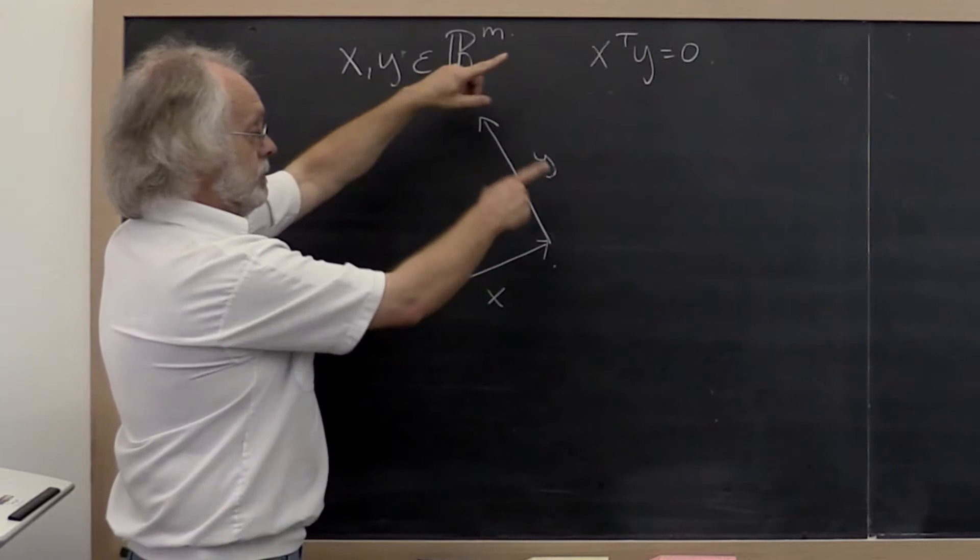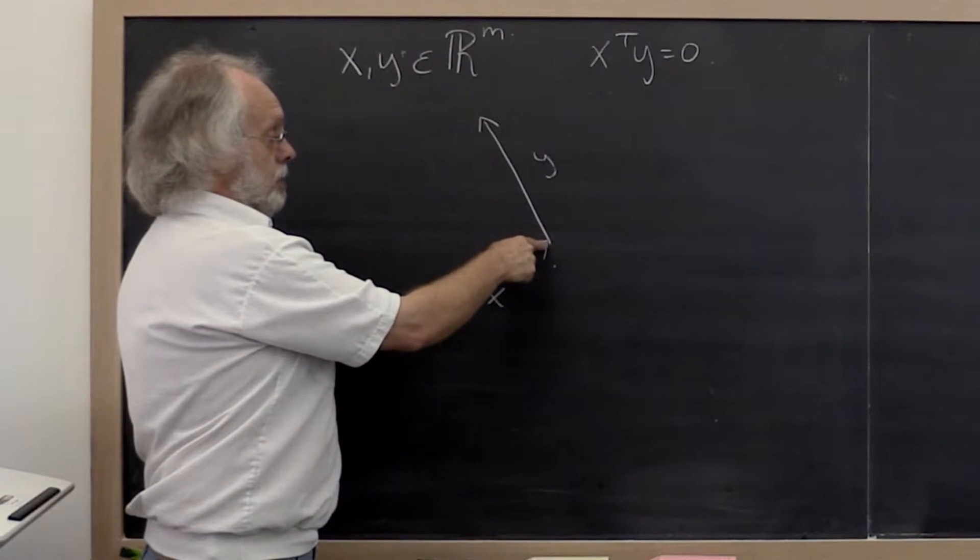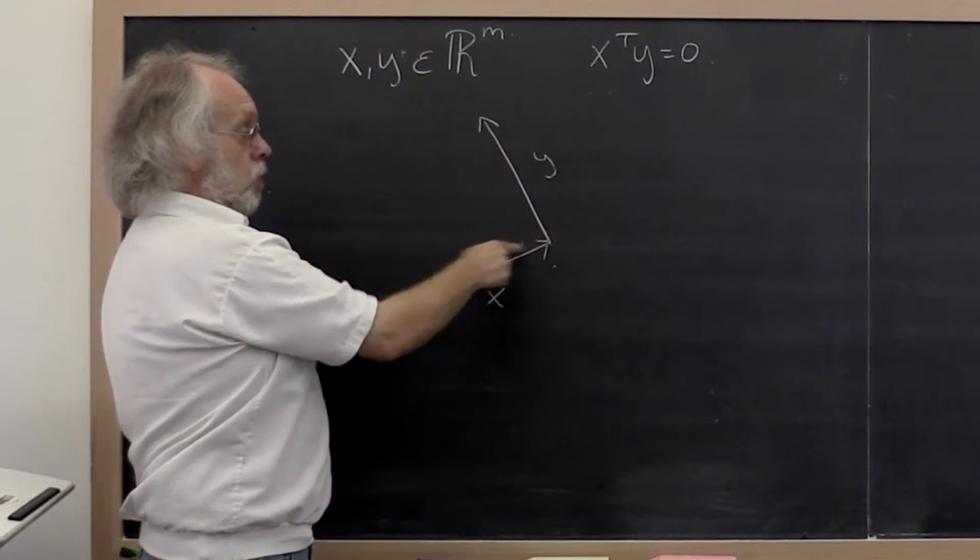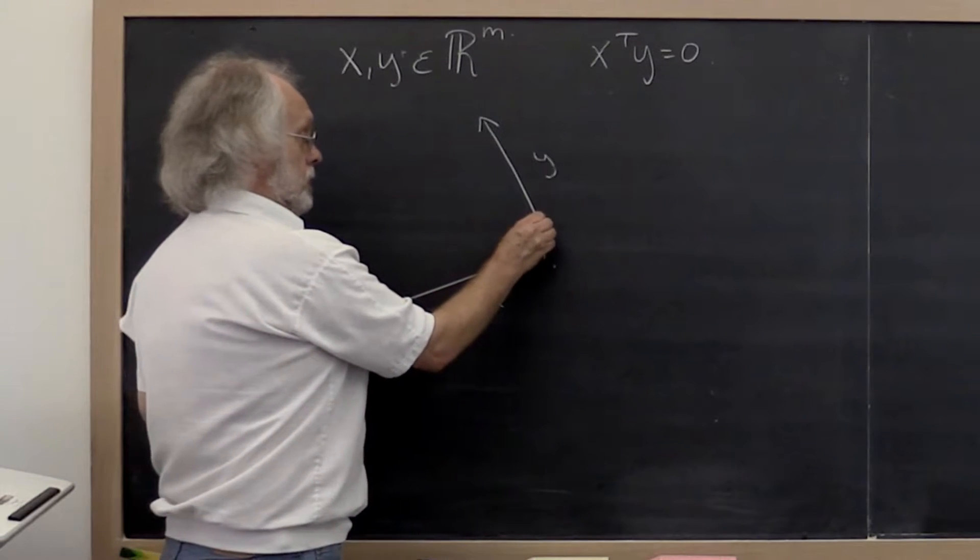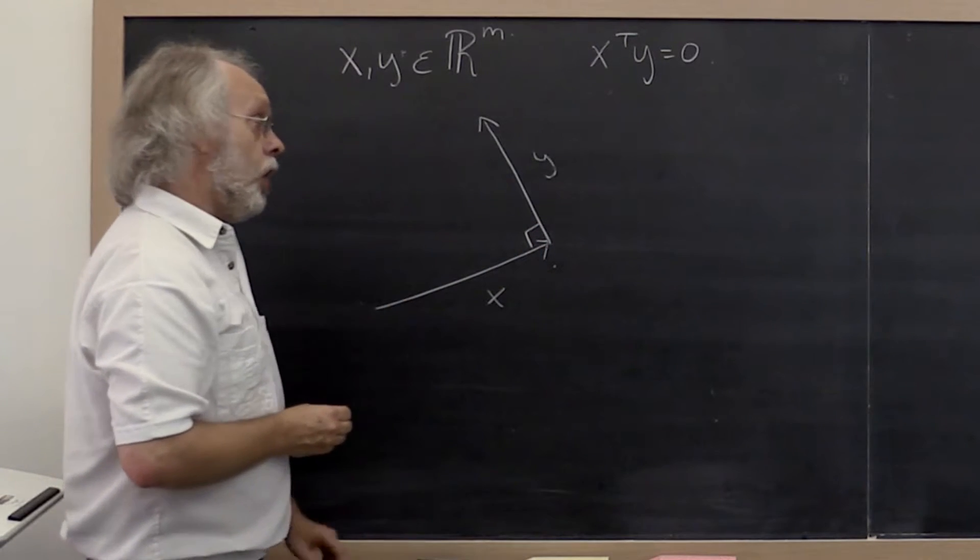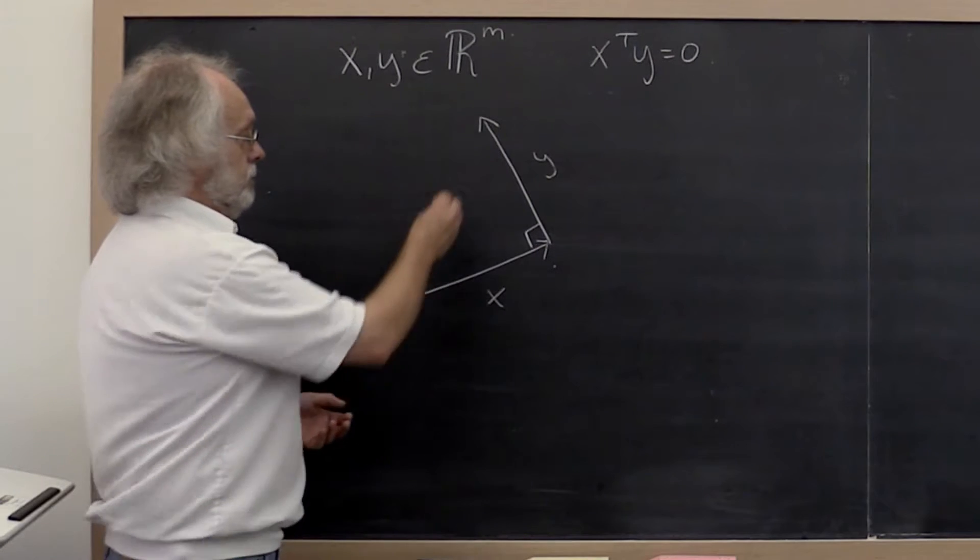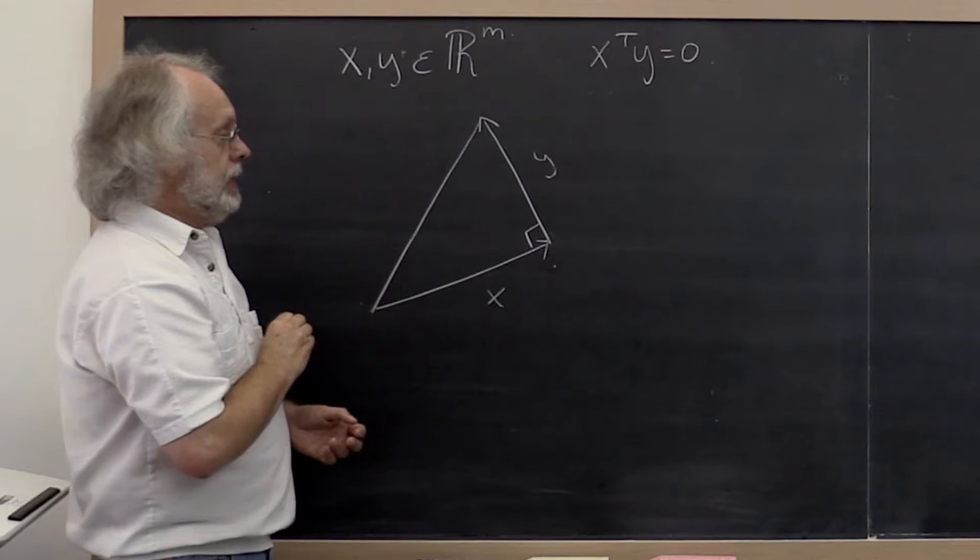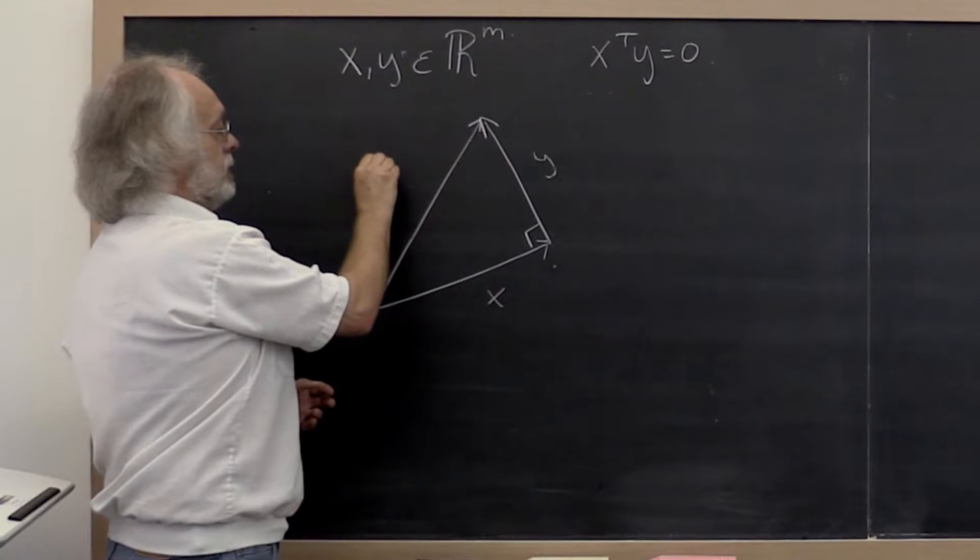Of course we can move vectors anywhere we want. So we can lay them what is known as head to toe to come up with this right here. Now if x and y are perpendicular or orthogonal, then what? Then we can complete our triangle. And then we know that this vector here is actually the vector x plus y.